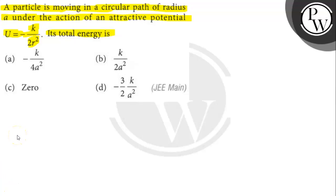The total energy of the particle will be equal to the sum of kinetic energy and potential energy of the particle. As the particle moves, both kinetic energy and potential energy should be calculated. Let's define all the terms given in the question. It is given that potential energy U equals minus k by 2r square.